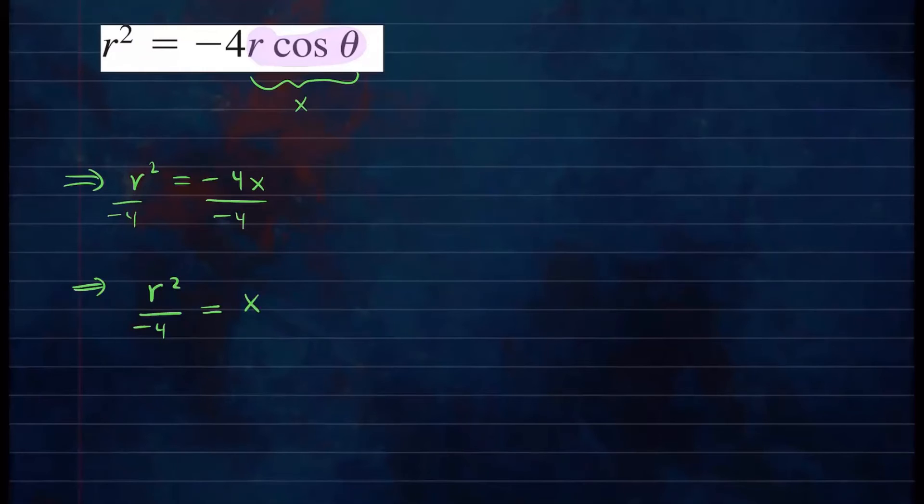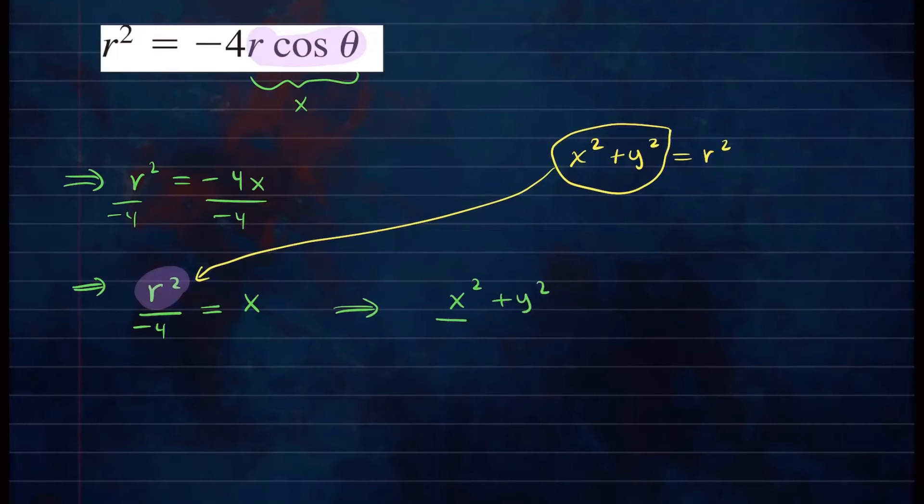Now let's play around with this a little bit. So it looks like I can replace this piece right here, r squared. We know that from the equation of a circle, x squared plus y squared is equal to r squared, where the circle is centered at 0, 0. And I can replace these guys for r squared right here. So my equation becomes the following. I have x squared plus y squared, replacing r squared, divided by negative 4 is equal to x.